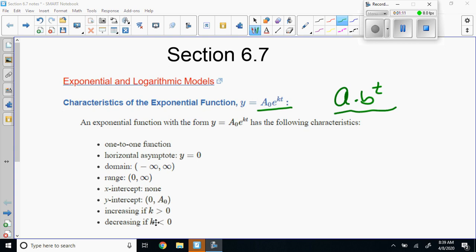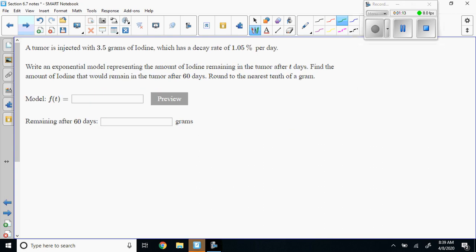The first problem: a tumor is injected with 3.5 grams of iodine which has a decay rate of 1.05 percent per day. Write an exponential model representing the amount of iodine remaining in the tumor after t days and find the amount that would remain after 60 days.